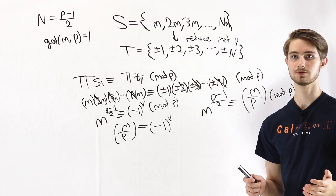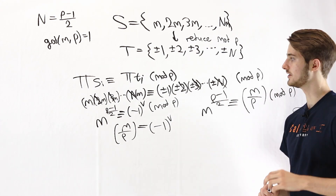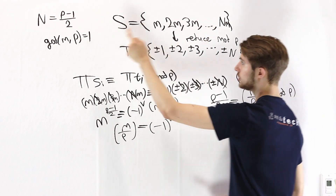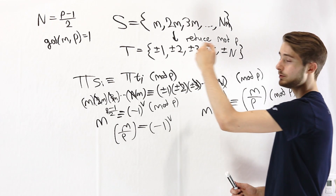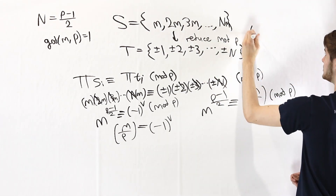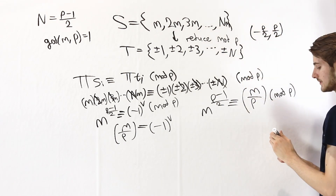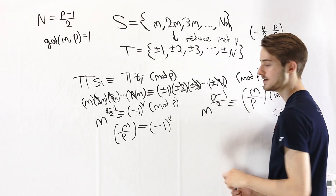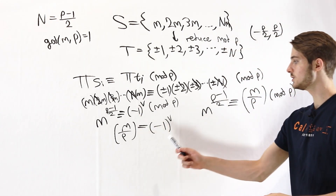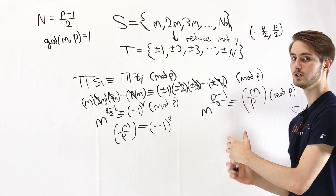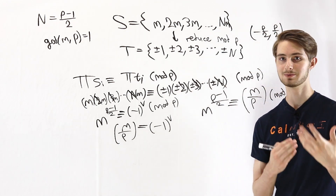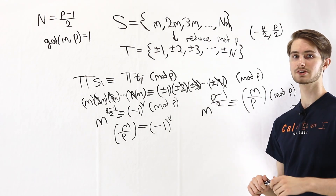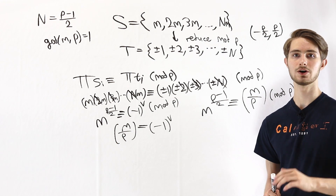So what exactly did we just prove? Gauss's Lemma states: suppose we take some number m which is co-prime to p. First construct the set S — the multiples of m up to p minus 1 over 2. Then construct a new set by reducing each element of S mod p into the interval negative p over 2 to positive p over 2. If the number of negative elements in this second set is v, then the Legendre symbol (m/p) equals negative 1 to the power of v. One of the biggest consequences of this lemma, and what we'll show next, is that we can use this to prove the important theorem called quadratic reciprocity.